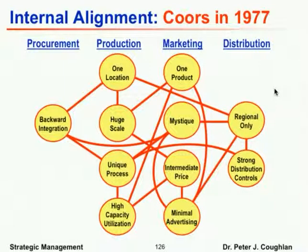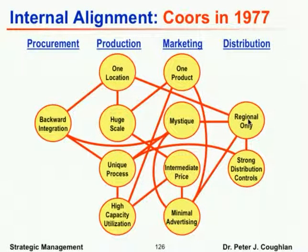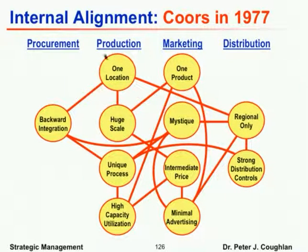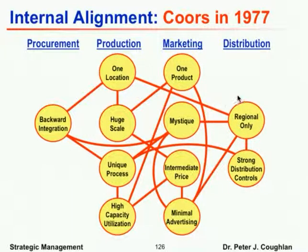If there weren't tradeoffs, everybody would want the same activity system and competition would be entirely about operational effectiveness — who has the best practices in each area, everyone copying everyone. But when you have tradeoffs, the optimal choice in one area depends on others. With Coors, when they shifted from regional to national or from one product to many, those changes created incompatibilities: having only one brewery in Golden, Colorado becomes incompatible with national distribution; having many products is incompatible with great scale, efficiency, high capacity utilization, and minimal advertising.